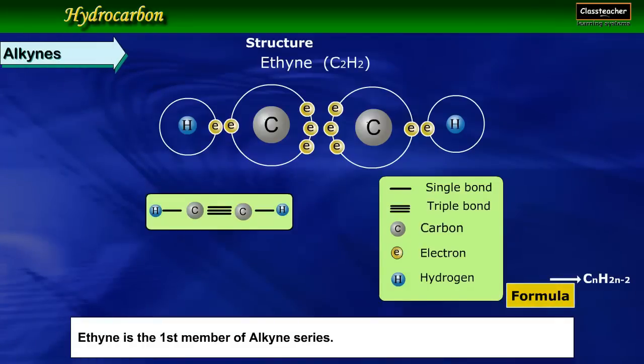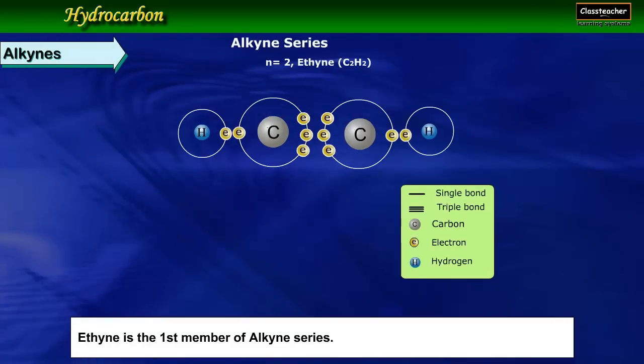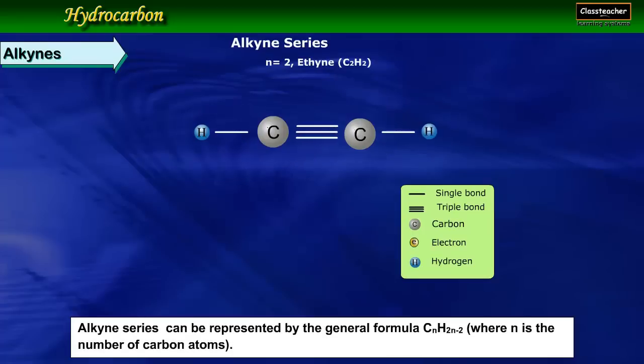Alkynes. Ethyne is the first member of alkyne series. Alkyne series can be represented by the general formula.